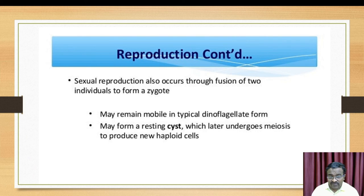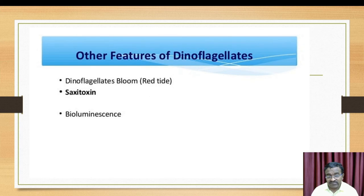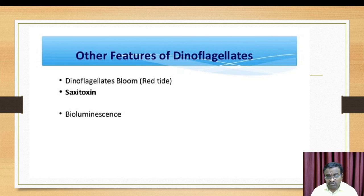Sexual reproduction takes place by cyst formation involving haploid cells. Dinoflagellates also produce bioluminescence and toxins such as saxitoxin. Some dinoflagellates are also used in forensic science departments for investigation of crimes, as reported recently in many research articles.